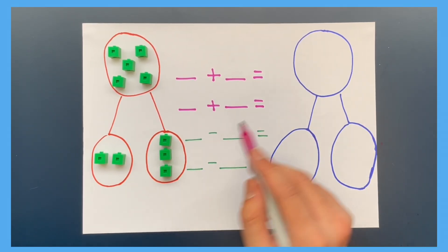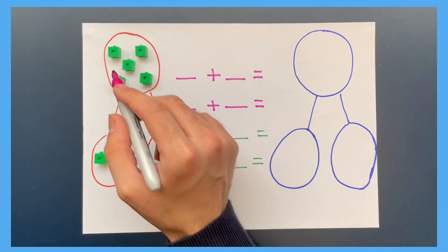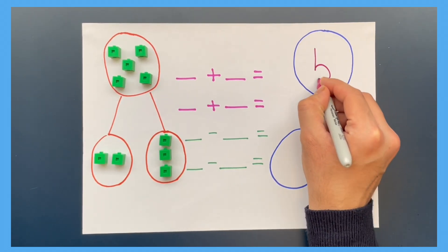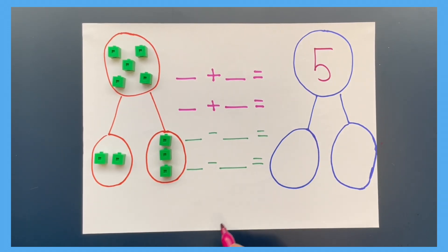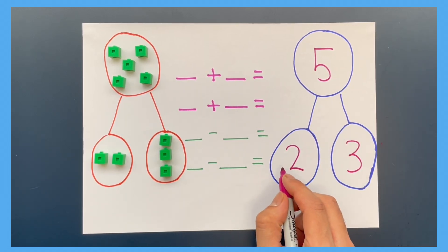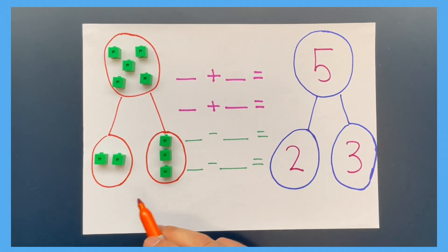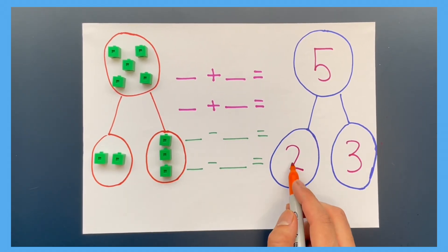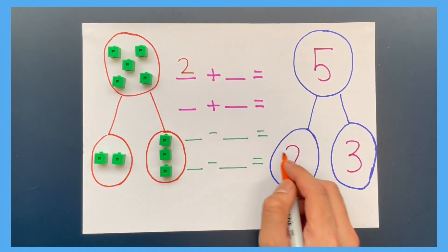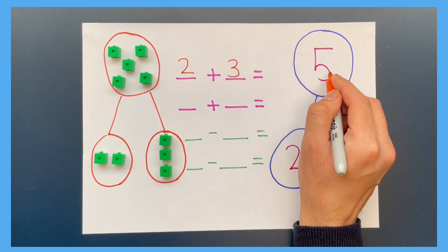Now let's complete this part whole model. Count with me: one, two, three, four, five. Now I have one, two on this side and now one, two, three on this side. Now the number facts we know are two add three equals five.